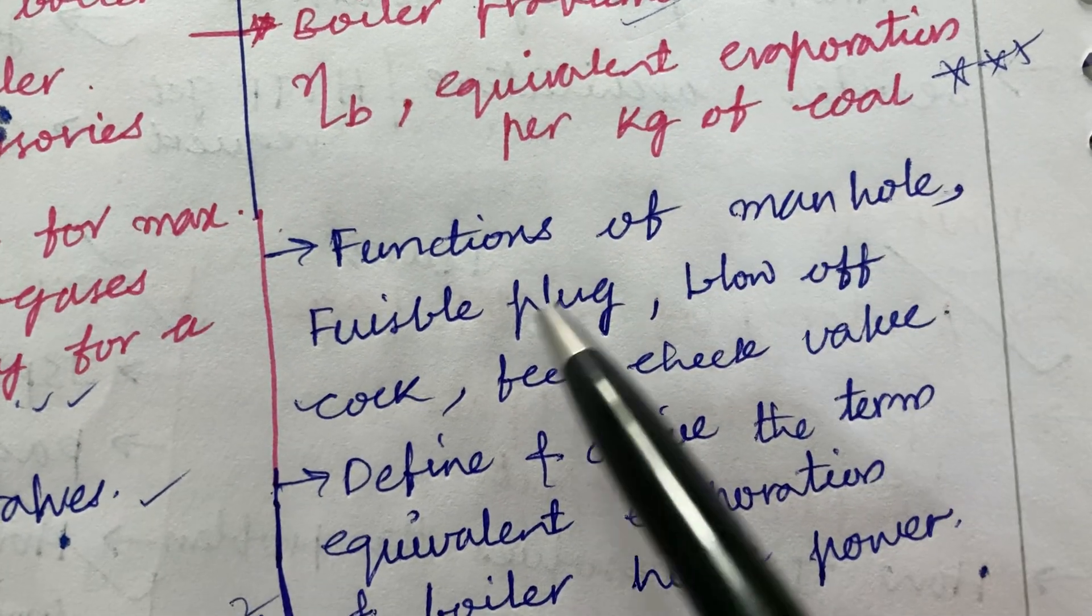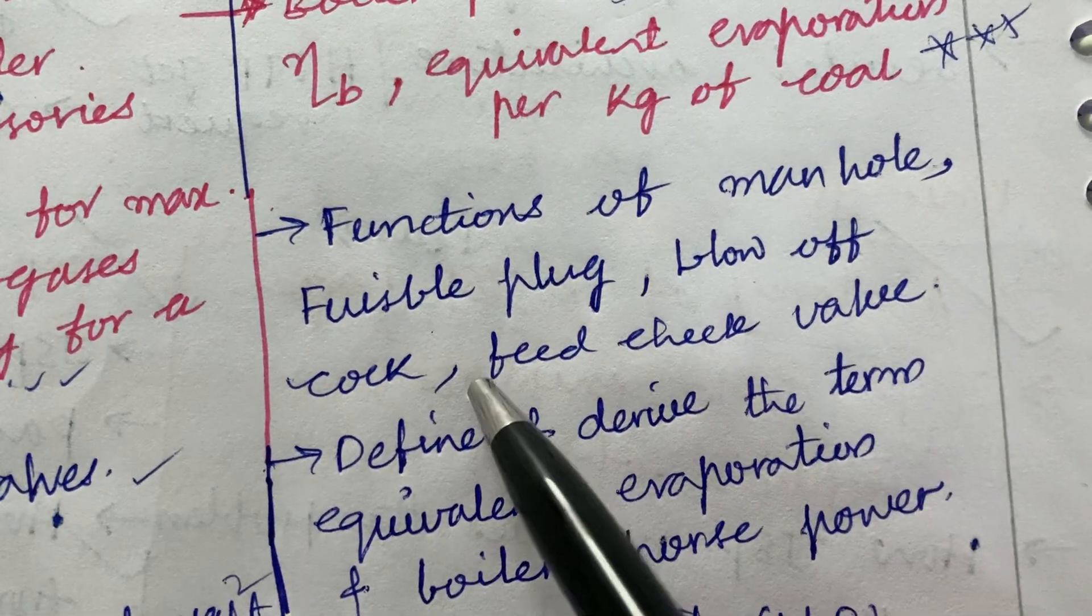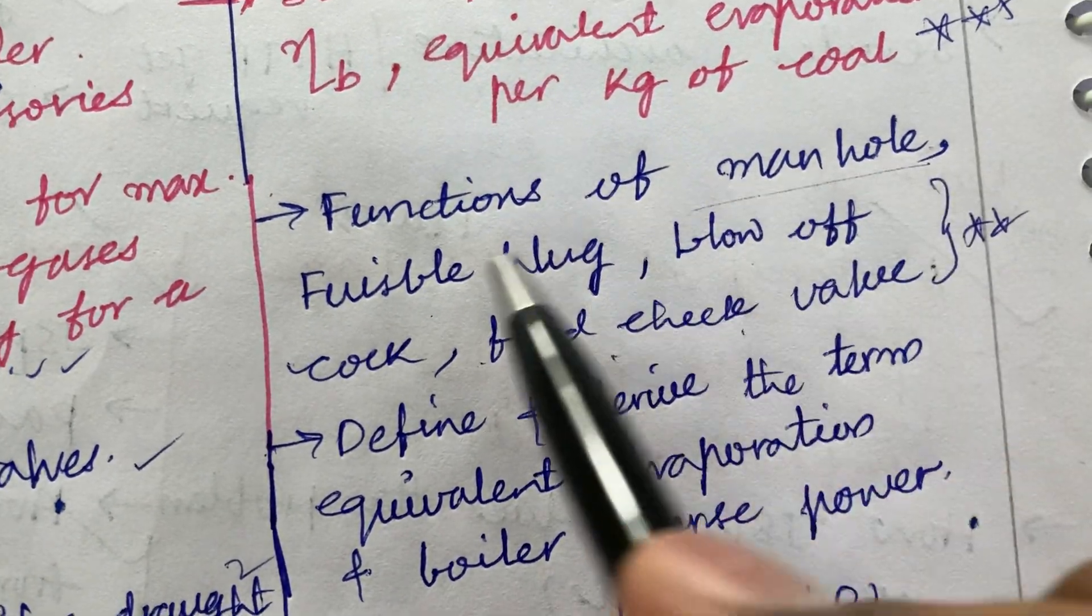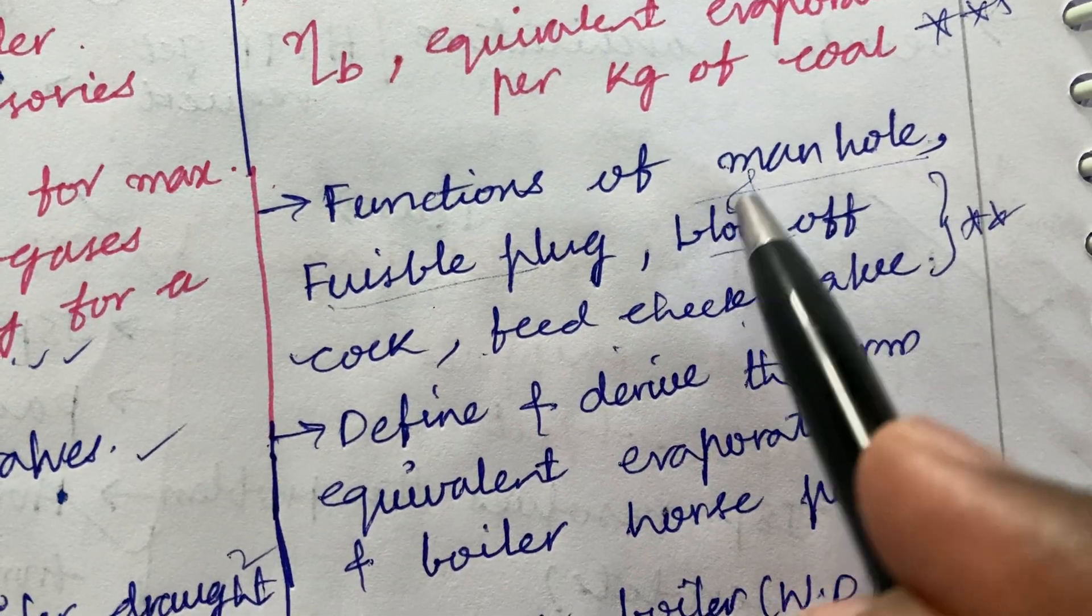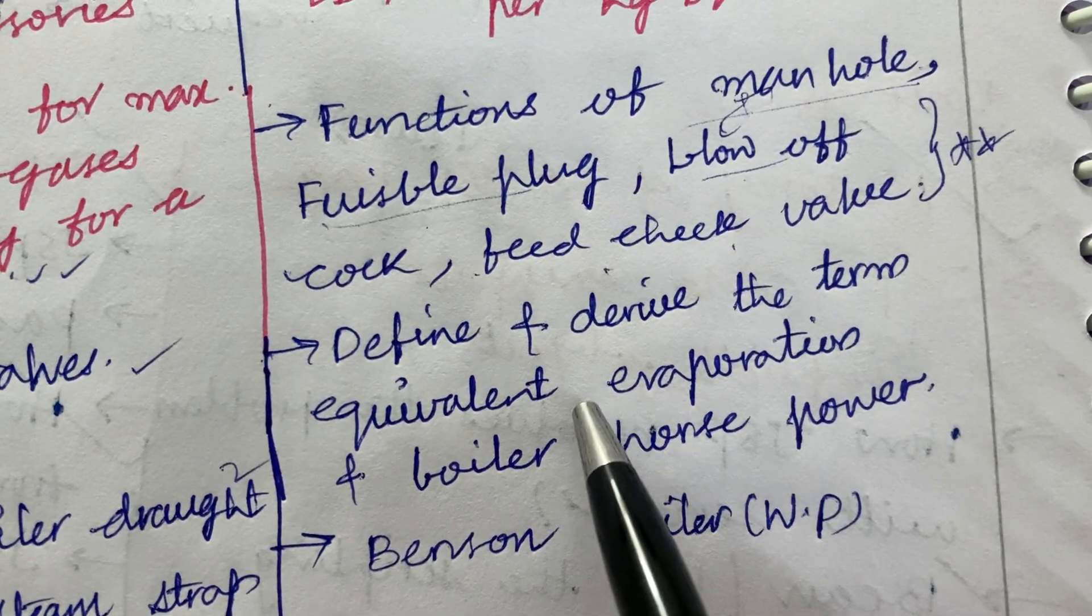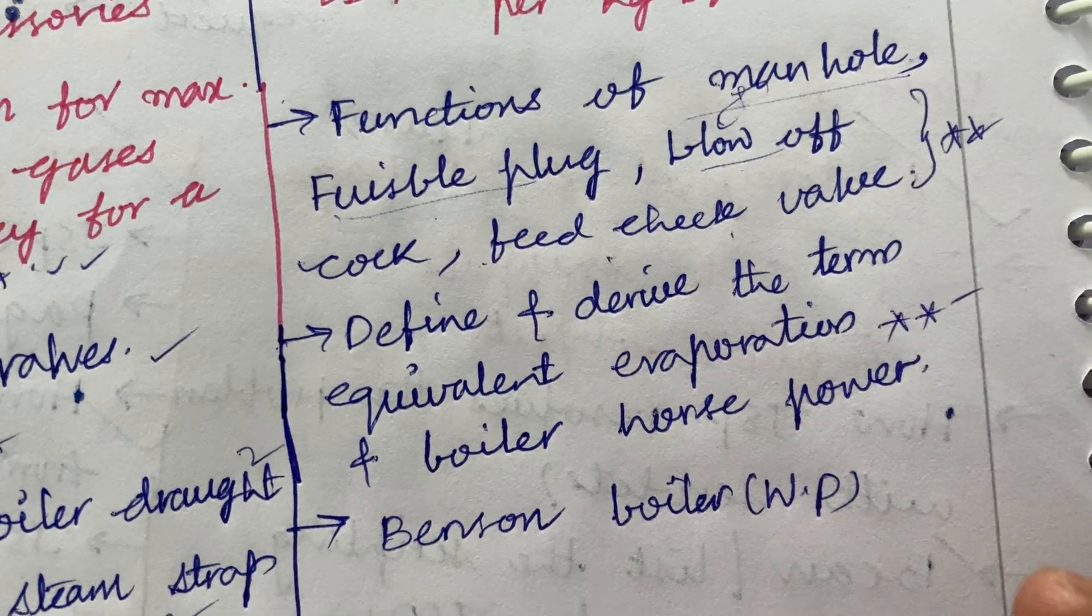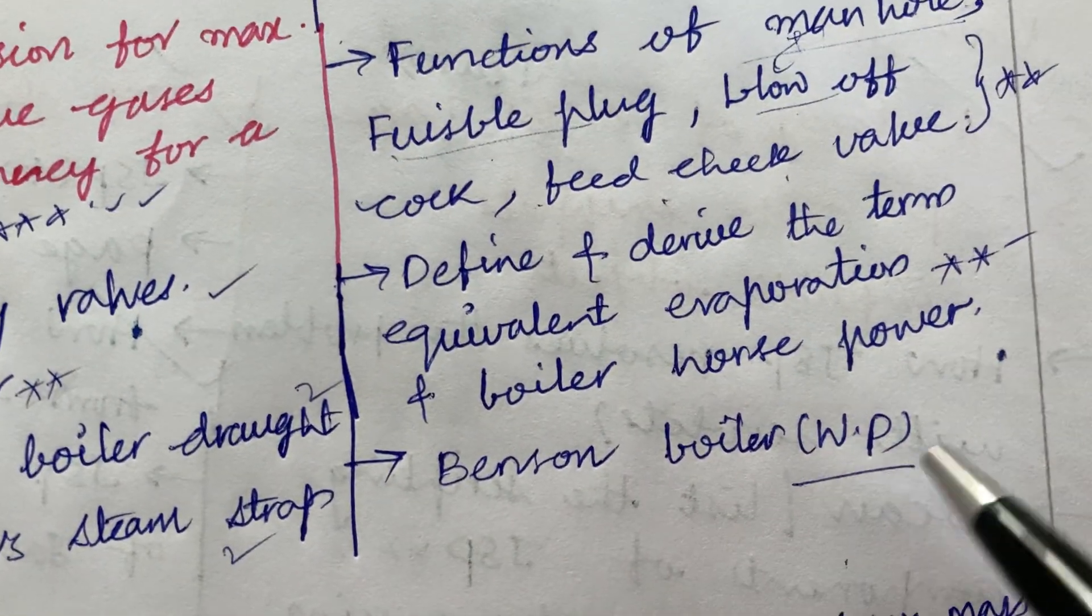Functions of manhole, fusible plug, blow-off cock, feed check valve is also said to be a 5 mark or sometimes each and every individual will be asked in two combinations for 2 mark. Define and derive the term equivalent evaporation and boiler horsepower is said to be a top most question and the Benson boiler and the working principle.